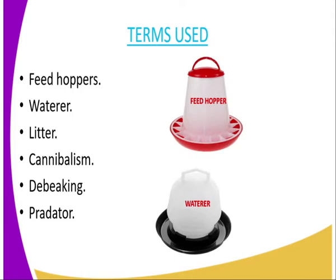Then we have the predator. A predator is an organism that kills another organism for food. For this case with poultry, the predators include the hawk and also we have the mongoose. Those are some of the predators that we normally find on the farm during poultry production.